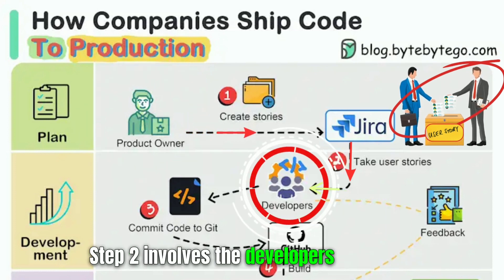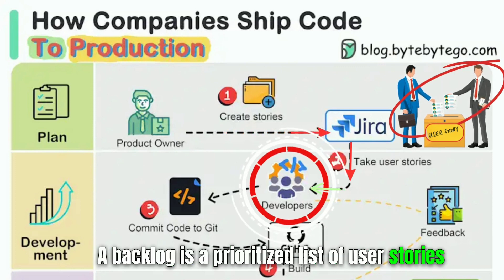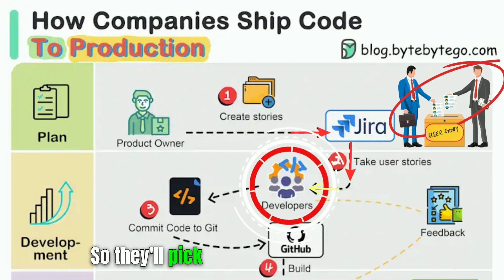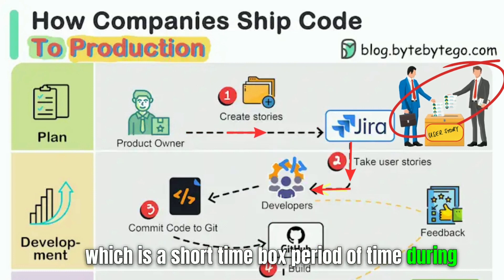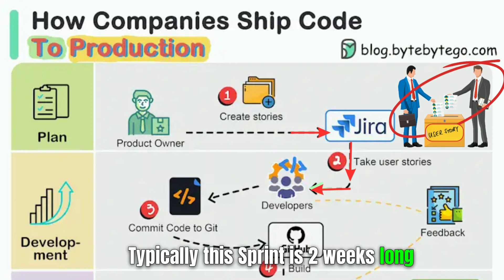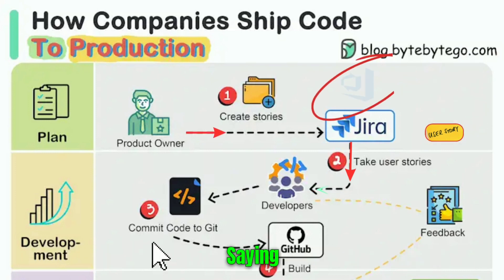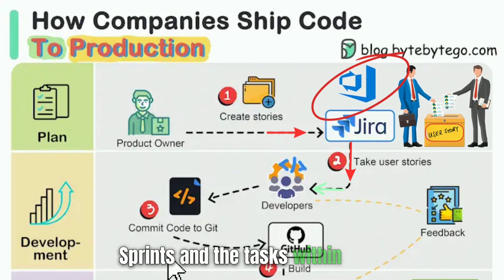Step two involves the developers picking up the user stories from the backlog. A backlog is a prioritized list of user stories, bugs, and other tasks that the developers need to work on. So they'll pick the user stories at the top of the backlog and put them into a sprint, which is a short time-boxed period during which developers work on completing those tasks. Typically, this sprint is two weeks long, but it could be shorter or longer depending on the team's needs. Tools like Jira and Azure DevOps are commonly used to manage the backlog, sprints, and the tasks within the sprint.